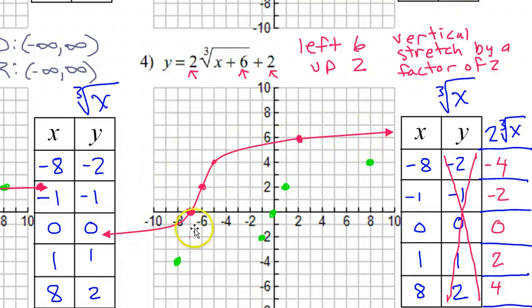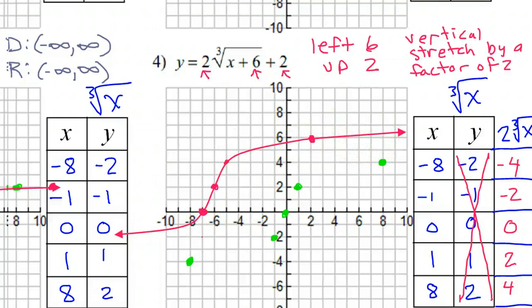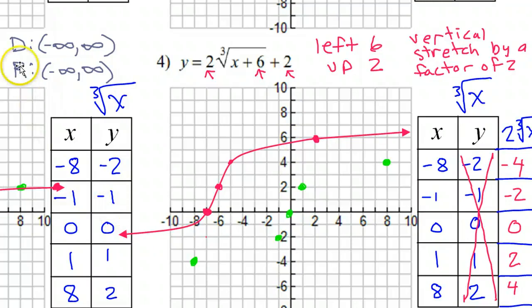Just like all other problems, the domain and range for number 4 is negative infinity to positive infinity.